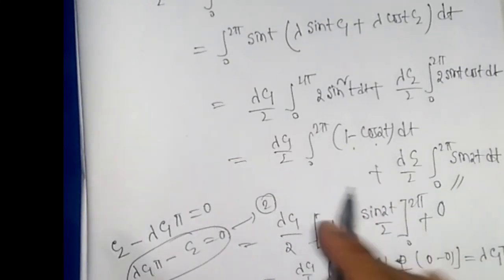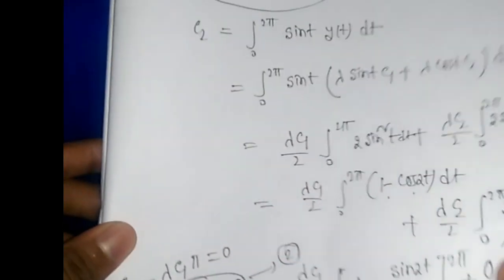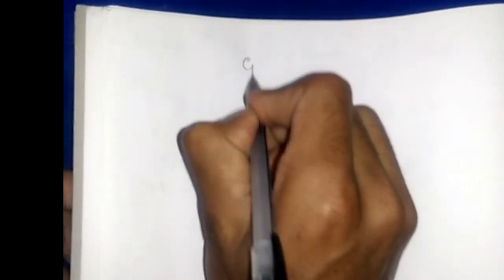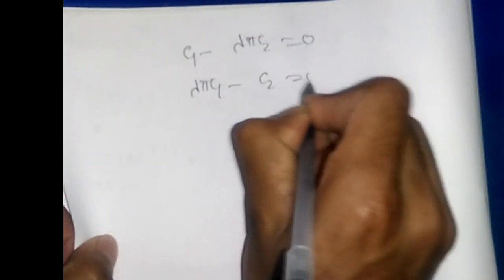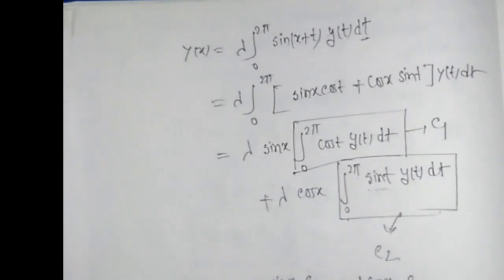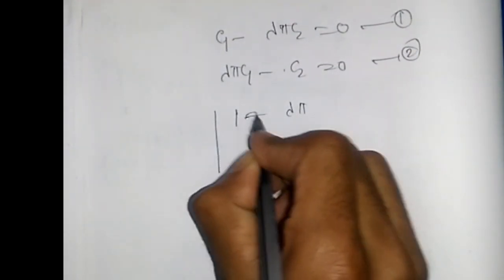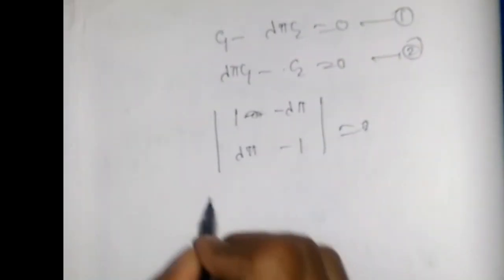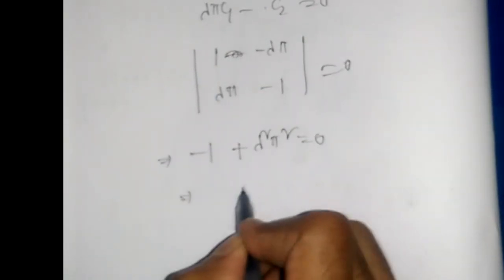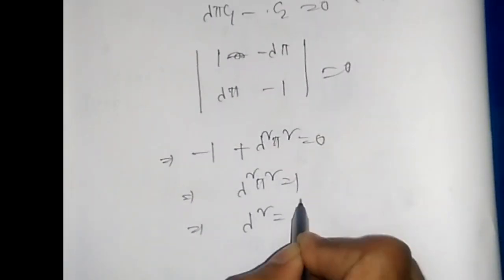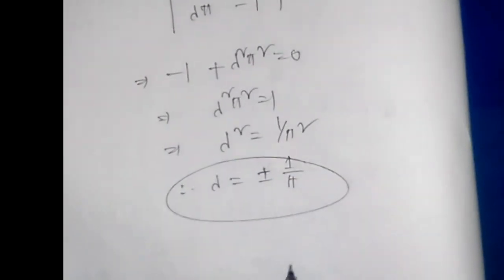These are two homogeneous equations in C₁ and C₂. For non-zero solutions, the determinant must be zero: |1, -λπ; λπ, -1| = 0, giving -1 + λ²π² = 0. Therefore λ²π² = 1, λ² = 1/π², and so λ = ±1/π. These are our eigenvalues.